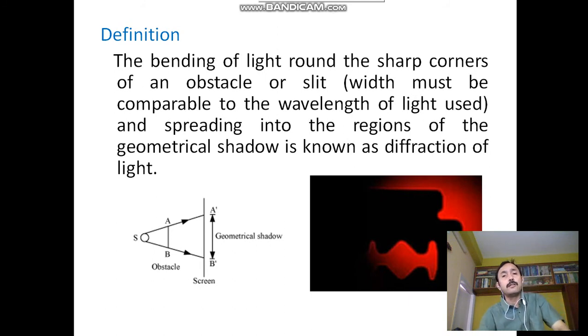That means first point is light must fall on some sharp corner, sharp obstacle. Then the light will bend, considering the slit width must be comparable to the wavelength of light used, and it will bend into its geometrical shadow region.